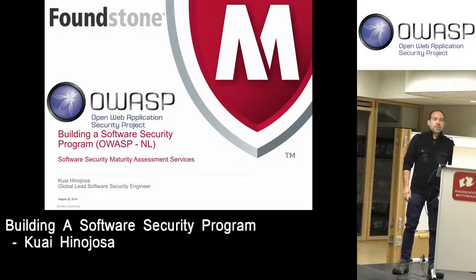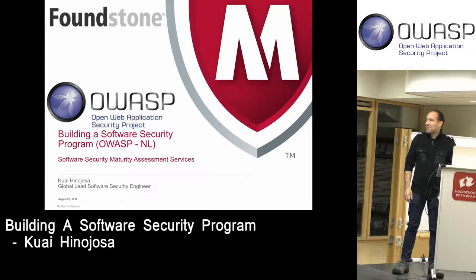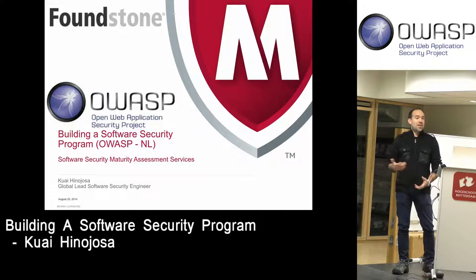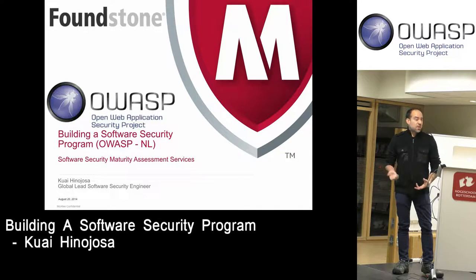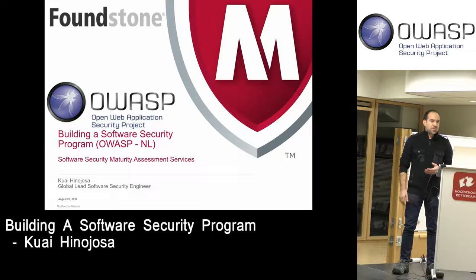I'm going to introduce myself. My name is Quay Nojosa, as he mentioned. I work for McAfee — that's why you see that ridiculous M over there. Unfortunately our logo is a little obnoxious. Just a little overview of McAfee: McAfee got bought by Intel, so now we're known as Intel Security. Within McAfee we have a group called Foundstone, which is basically an ethical hacking group for the company. We've been around for many years.